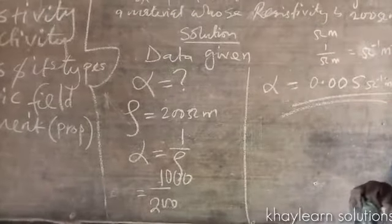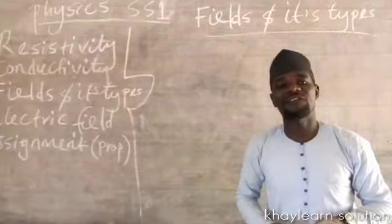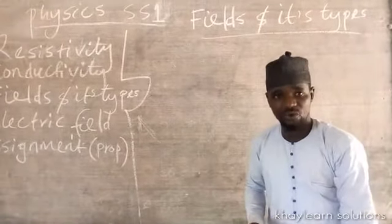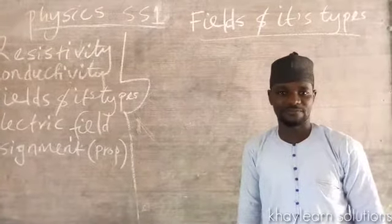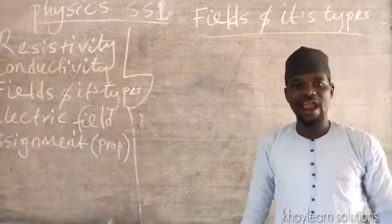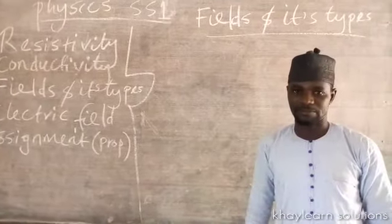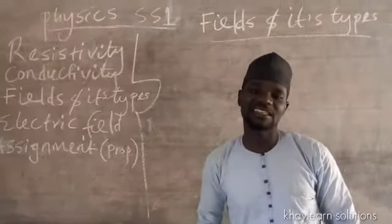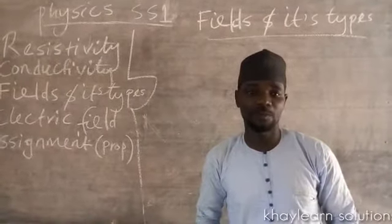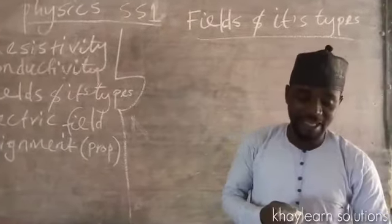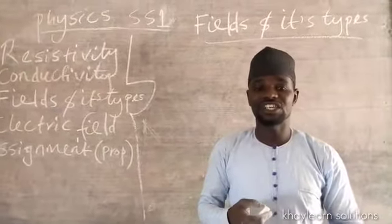Let's move on and explain fields and their types. A field means a portion or region where a phenomenon can be found — it is just a space where an event takes place. We have three types of field: number one, electric field; number two, magnetic field; and number three, gravitational field.